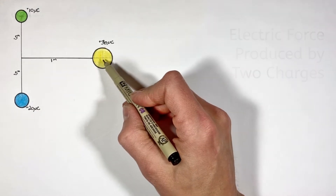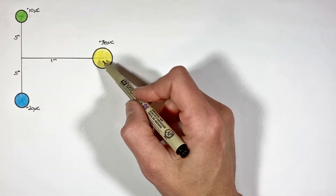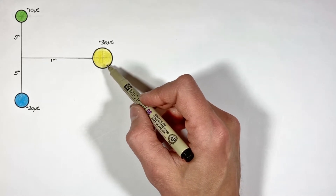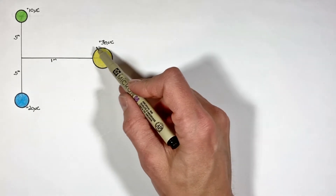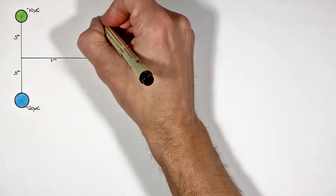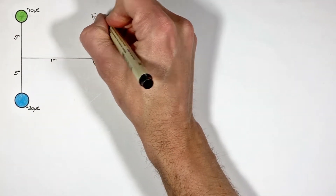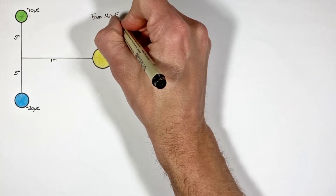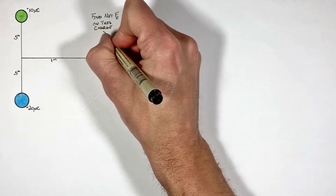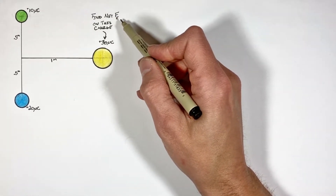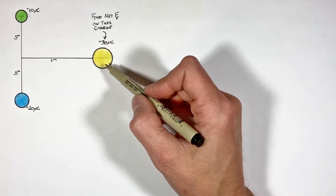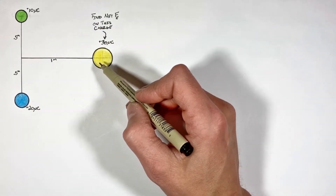Today we have three different charges distributed in a triangular pattern. In this problem we're going to solve for the total or net electric force acting on one charge as a result of the other two charges. Anytime we're trying to solve for electric force we need to use Coulomb's law. The catch is because these charges are distributed in a triangle, there are going to be several different steps.